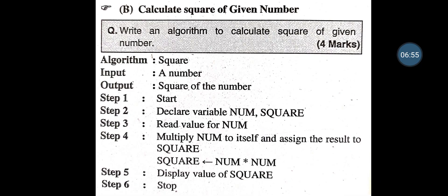Calculate the Square of a Given Number. Algorithm name is Square. Input is a number; output is the square of the number. Step 1: Start. Step 2: Declare variables Num and Square. Step 3: Read the value for Num. Step 4: Square means twice multiplication of Num — multiply the value with itself and assign the result to the variable Square. Step 5: Display the Square. Step 6: Stop.